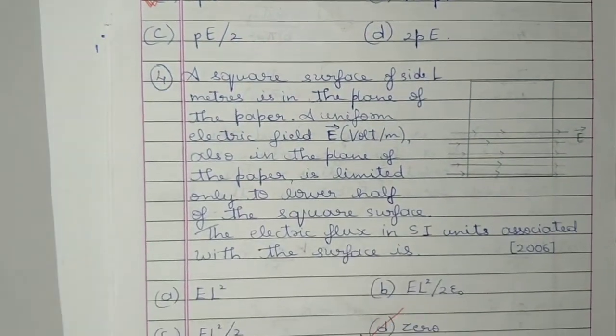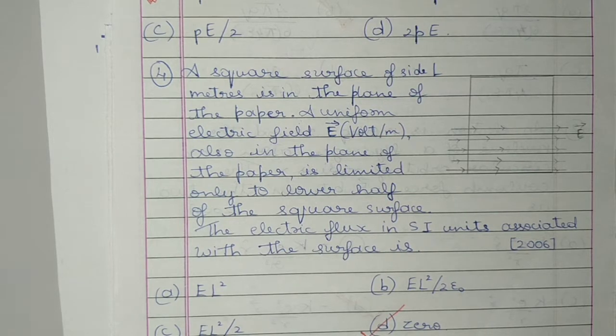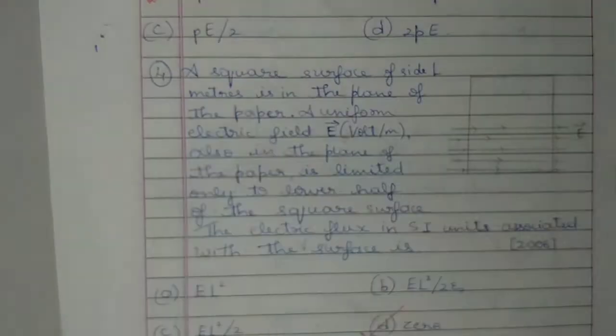Question 4: A square surface of side L meters is in the plane of the paper. A uniform electric field E, also in the plane of the paper, is limited only to the lower half of the square surface. The electric flux associated with the surface is — electric flux is the number of field lines passing through a given area, but here the electric field lines are passing over the plane of the paper and not through it, so the flux is 0.